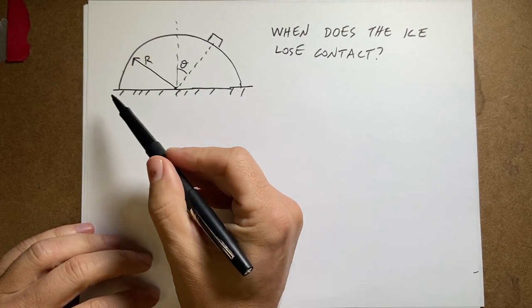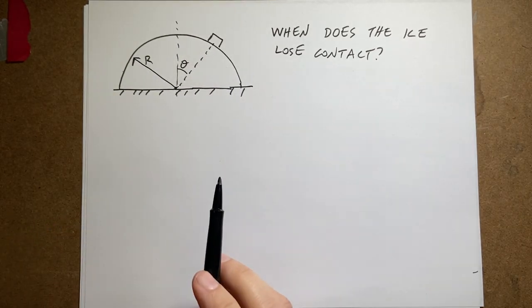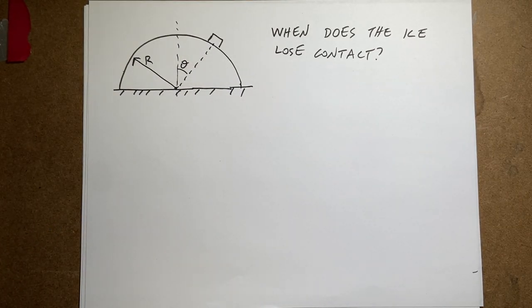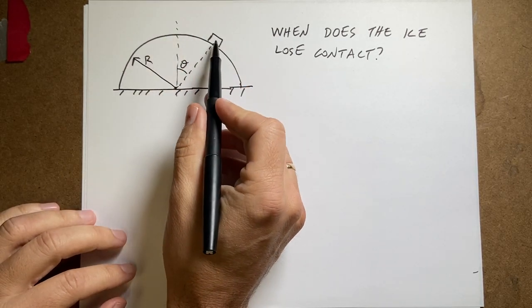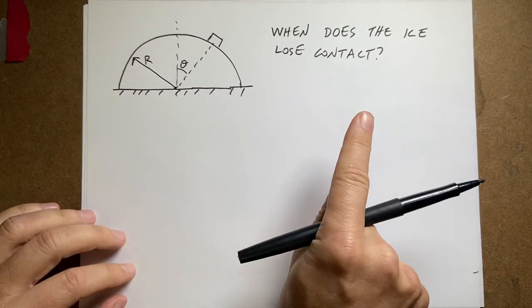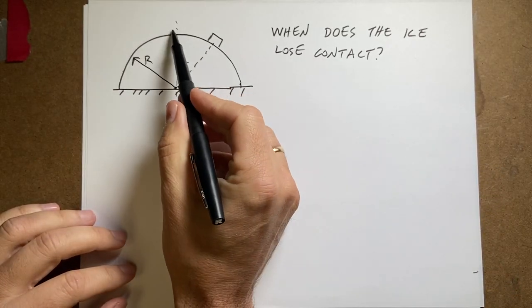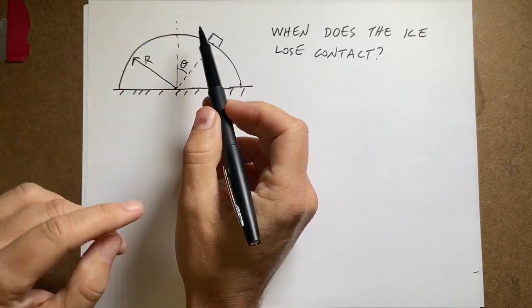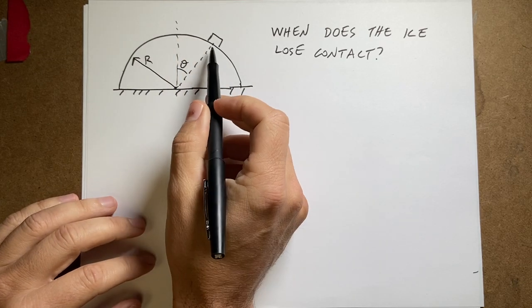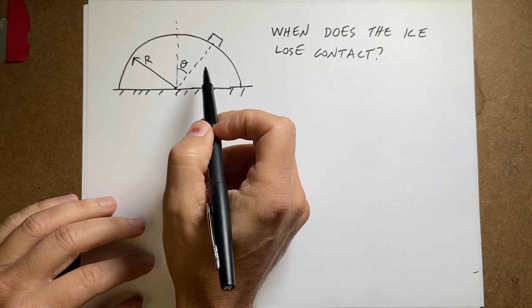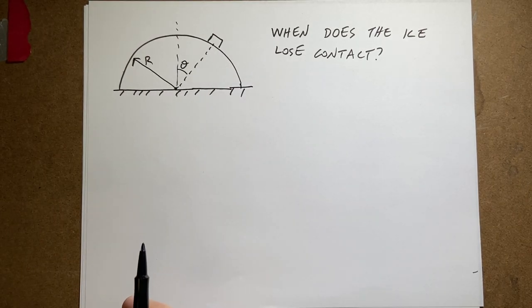So here's the problem. I have this inverted spherical bowl, or it could be cylinder, whatever you want. It doesn't matter. And on top of that, I have this block of ice. There's no friction. And it starts up here, and I give it a tiny little nudge, and it starts sliding down the bowl. And the question is, when does it lose contact with the bowl?